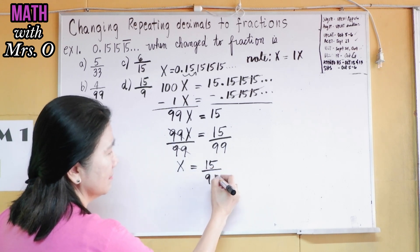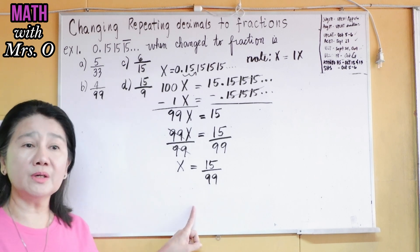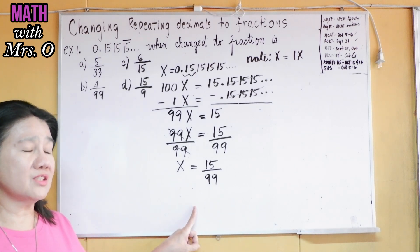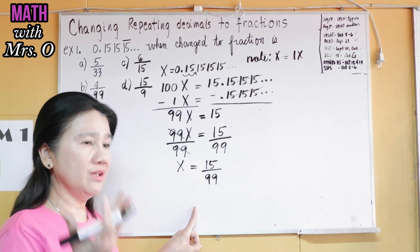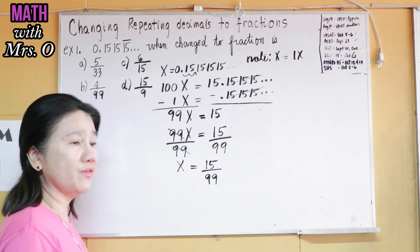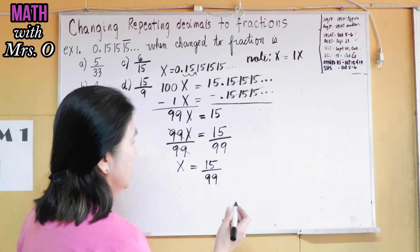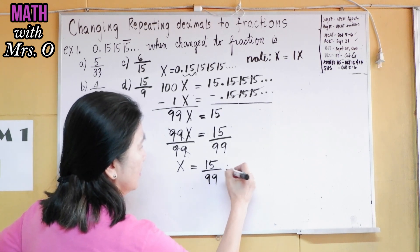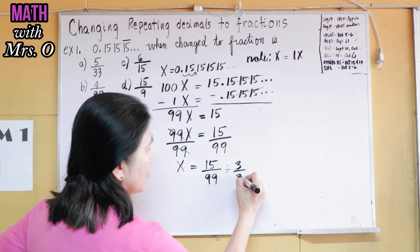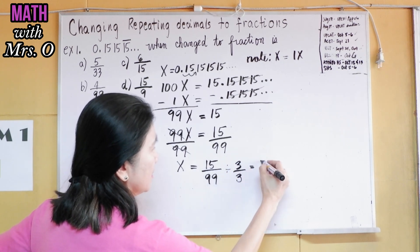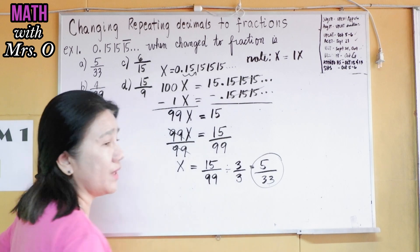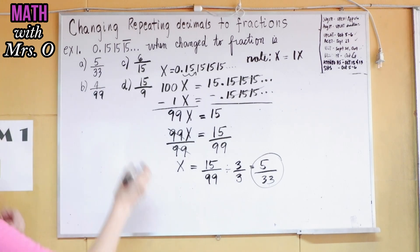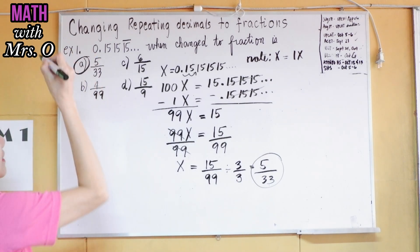But wait — what do you see about 15 and 99? Is this already in simplest form? No, not yet. So we divide by the greatest common factor. What's the greatest common factor? 3. So 15 divided by 3 is 5, and 99 divided by 3 is 33. So the final answer is 5 over 33, which is letter A.